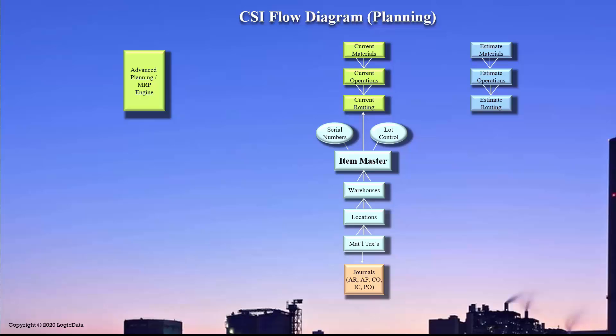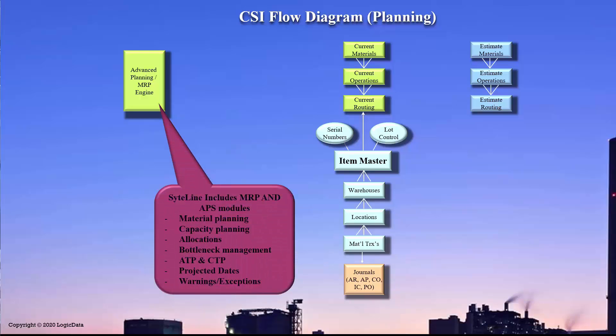SiteLine includes a complete planning engine that can run in either MRP mode or advanced planning and scheduling mode. With these tools, you'll be able to see your full material plan—what do I need to buy in order to satisfy my demand, what do I need to build? You'll be able to see your capacities, where you might be over capacity or restrained, bottlenecked in those capacities.